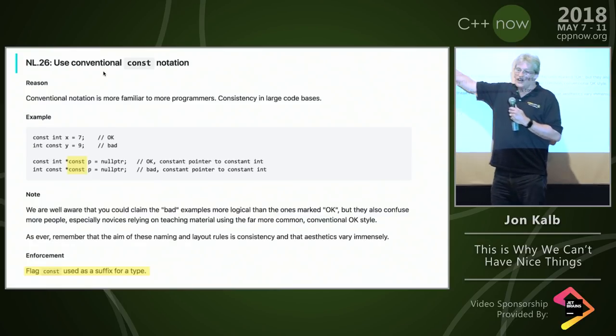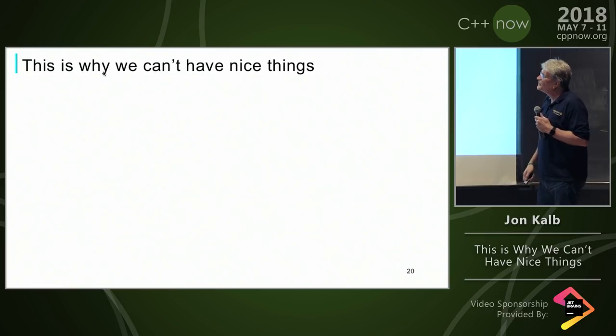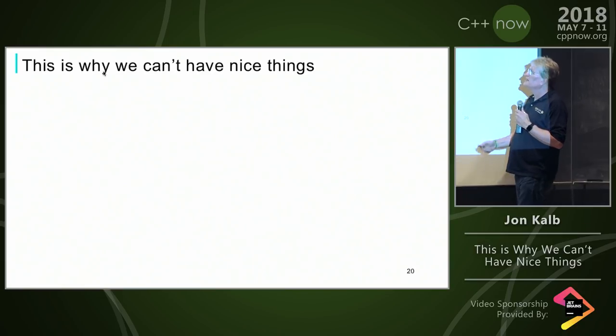In their example, const is used as a suffix because in the case of pointers, it has to be. So this is why we can't have nice things.